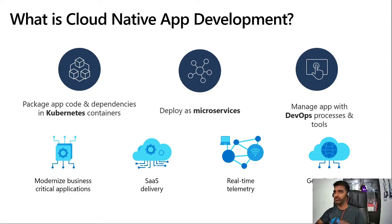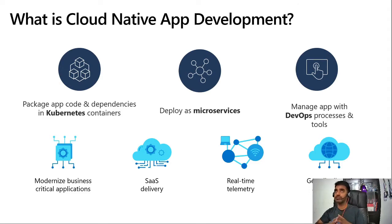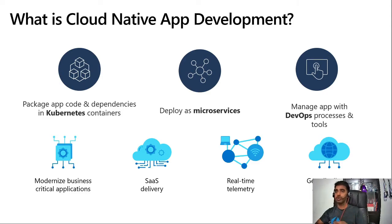Cloud native is basically about three things. First, building APIs — exposing services as lightweight APIs for easy integration within and outside your organization. Second, packaging your application as containers, which is an architectural approach for developing applications as a collection of modular, loosely coupled services. Third, building microservices — having chunks of modules by separating logic. Finally, agility through DevOps, which is about people, process, and technology that promotes a collaboration environment and lets you build applications quicker and faster to market.